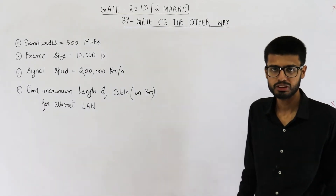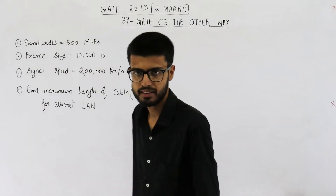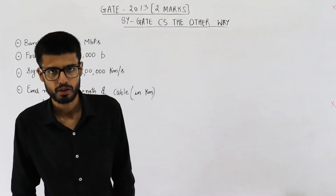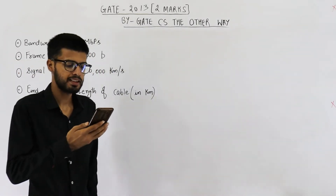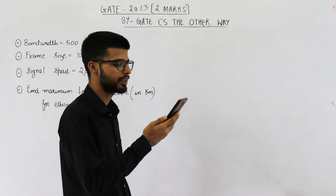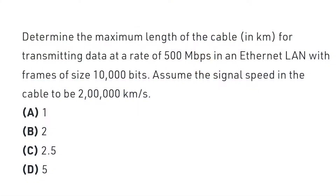Hello people, welcome back. The question is from the GATE 2013 exam and this one is for two marks. They are asking: determine the maximum length of cable in kilometers for transmitting data at a rate of 500 megabits per second in an Ethernet LAN with a frame size of 10,000 bits.